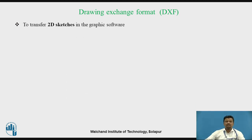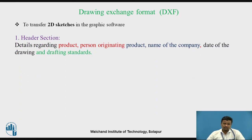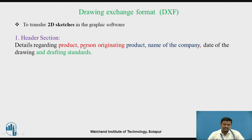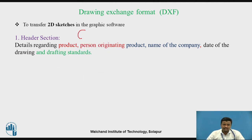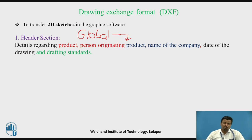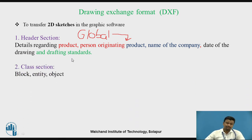To transfer 2D sketches in graphics software, there are different types of sections in DXF. There is a Header section, which is equivalent to the Global section in IGES and contains details regarding the product, who generated the design, the company name, and the date of the drawing. The Class section covers blocks, entities, or objects — that is, geometrical entities.